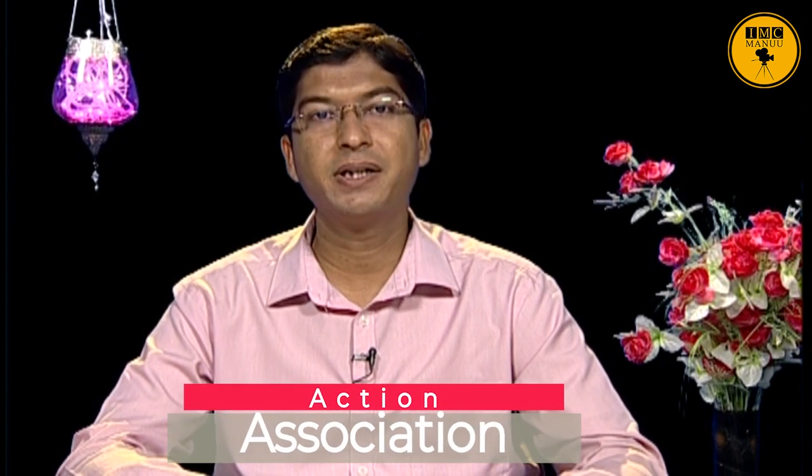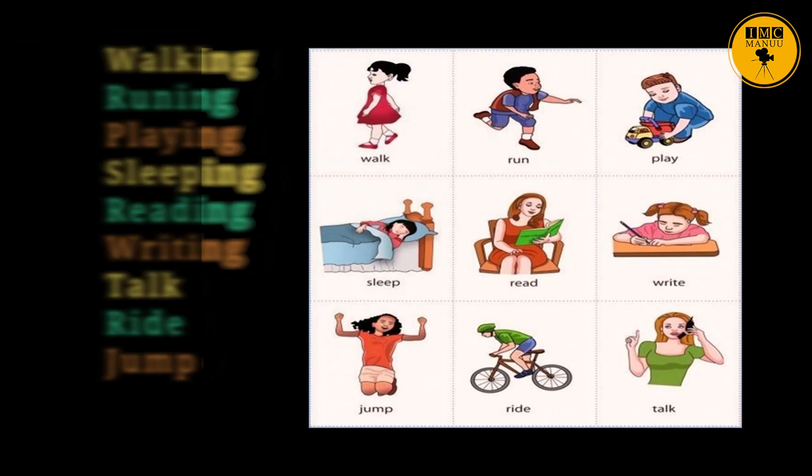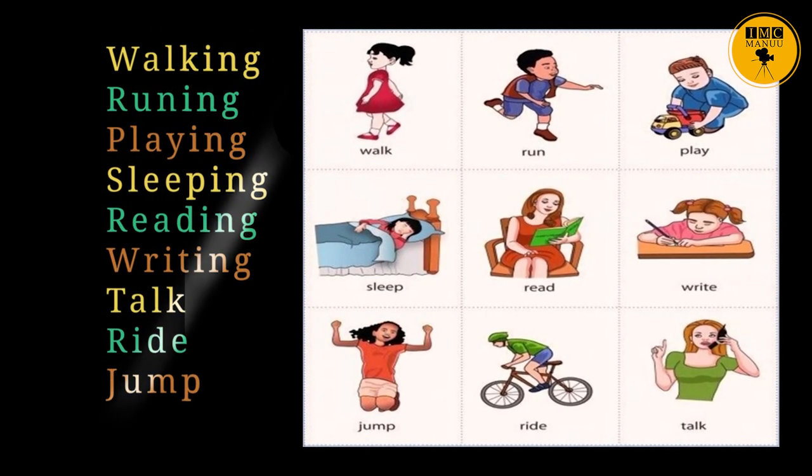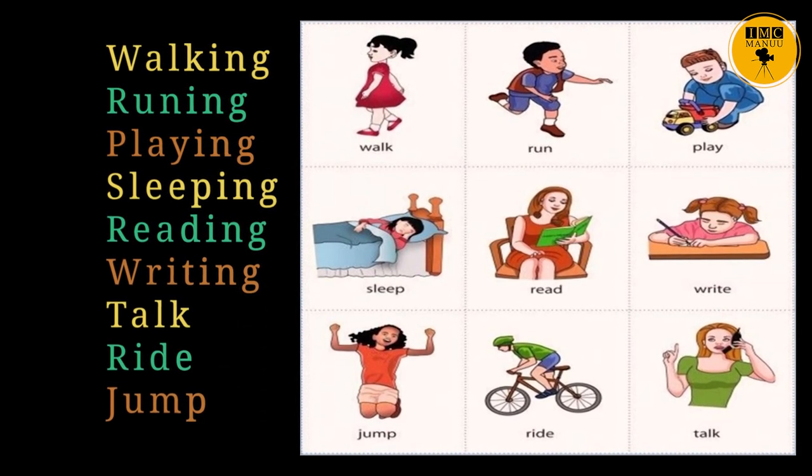The next technique is Action Association. The teacher associates an action to teach a word. It is generally used to explain verbs or action words. For example, the teacher walks in the class and says 'I am walking,' then asks what is the meaning of the word 'walk.' The teacher can perform actions such as walking, running, playing, sleeping, reading, writing, talking, riding, and jumping, then asks students the meaning of each action verb.